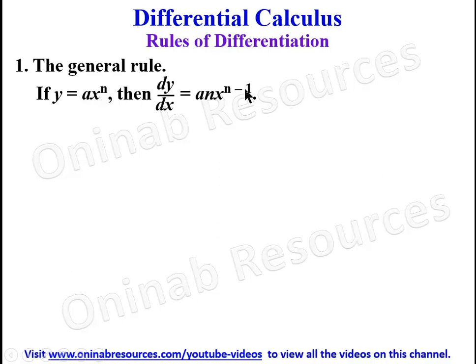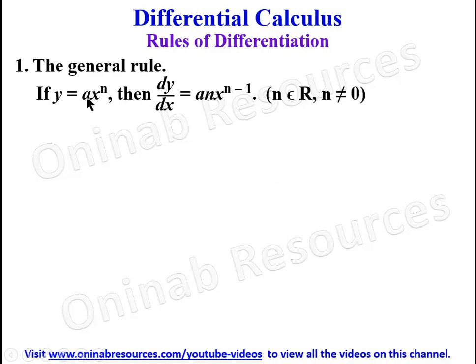In this general rule, you multiply the coefficient of the variable by the power, then reduce the power by one. That is the general rule for differentiation of algebraic functions.